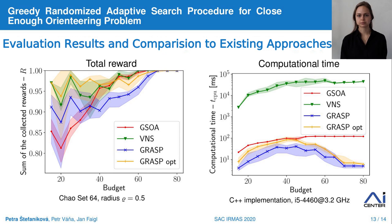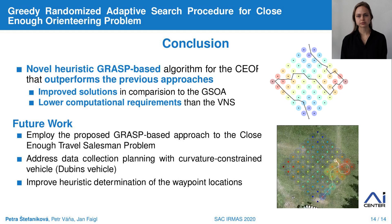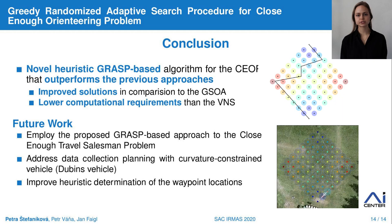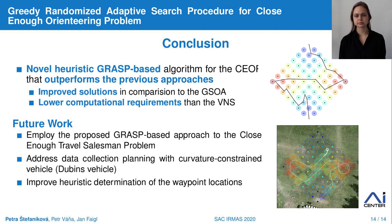In this paper, we extended the existing method GRASP with segment remove to solve the generalized Close Enough Orienteering Problem with disk-shaped neighborhood areas. This proposed approach achieved excellent results compared to the two existing methods: GRASP obtained a better solution than the Growing Self-Organizing Array and spent less computational time than the Variable Neighborhood Search. In future work, we want to use a GRASP-based algorithm for the Close Enough Traveling Salesman Problem, and we can also modify this algorithm to consider a curvature-constrained vehicle or improve the waypoint location heuristic. Thank you for your attention and for more information, see the box below.